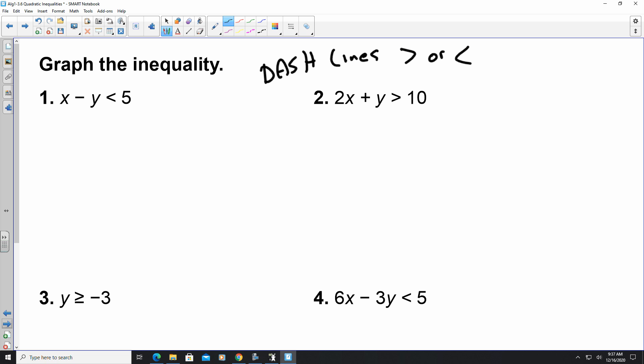Number 3 is going to be a solid line because it's greater than or equal to or less than or equal to. So the other thing that inequalities happen, whether it's quadratic or linear, there is going to be some shading involved.